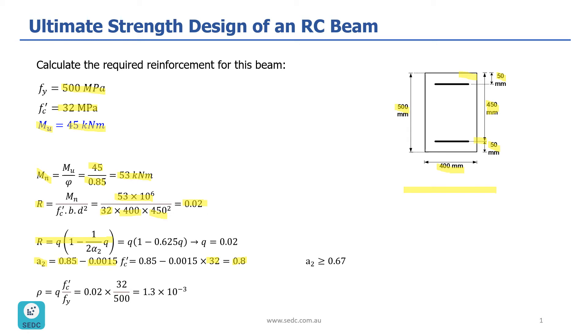Now, if you put the value of A2 in this equation here, with the value of R that we just calculated, Q is going to be 0.02. Then, the next step is to calculate Rho, based on this Q, which is equal to Q times F prime C, 32, and Fy of 500 MPa. So, Rho is going to be 1.3 times 10 to the power of negative 3.